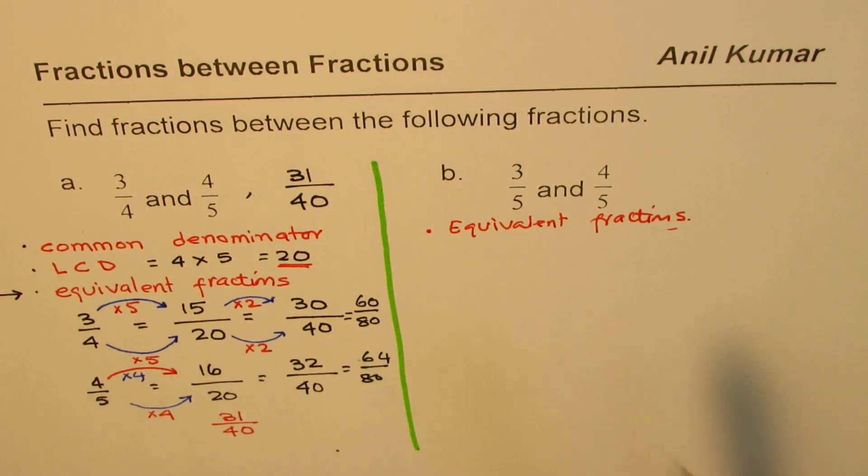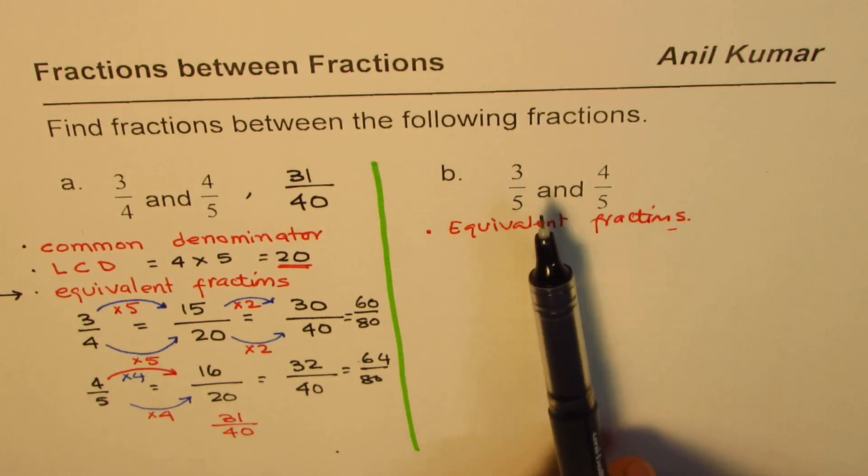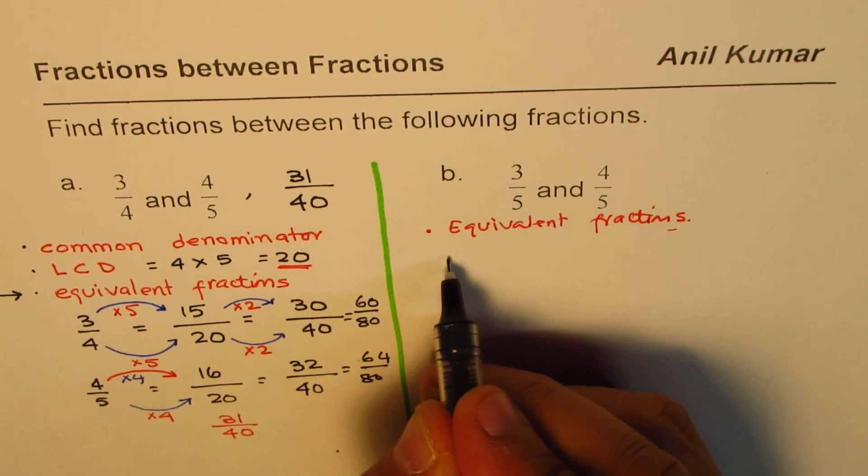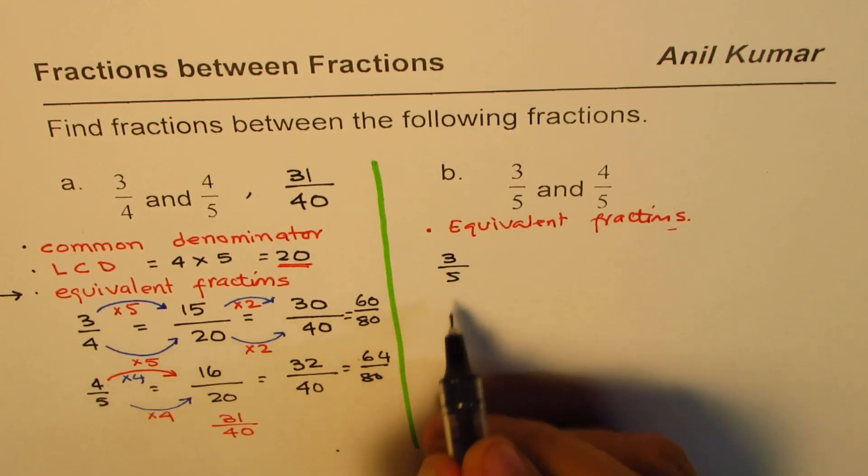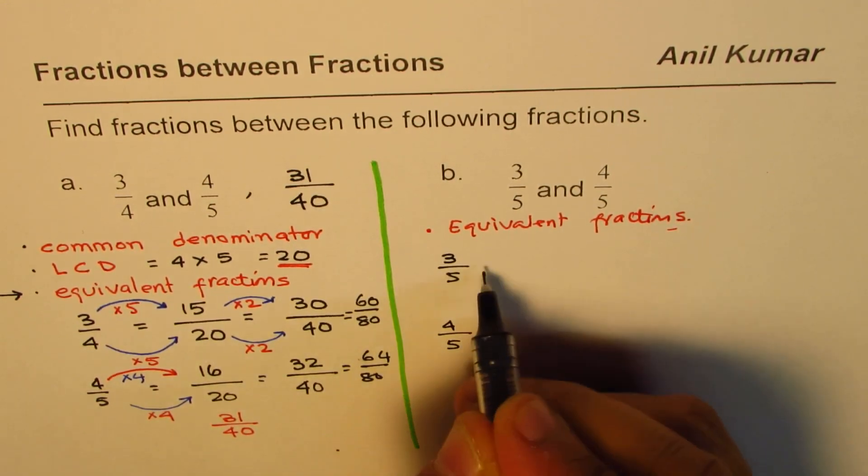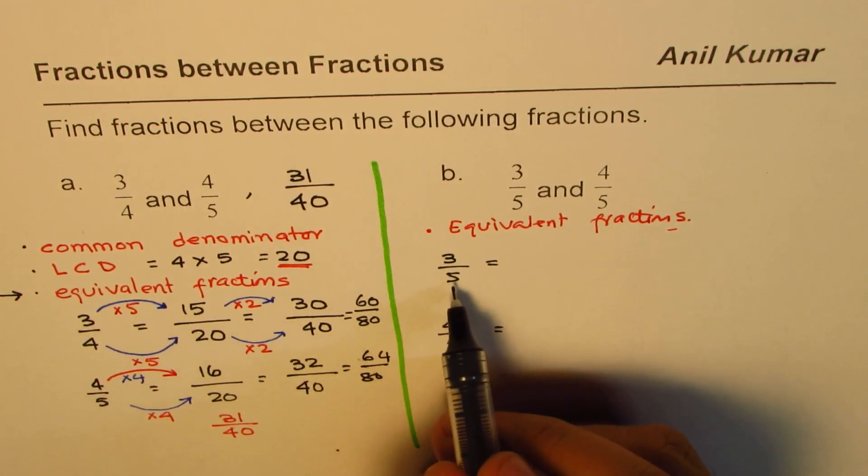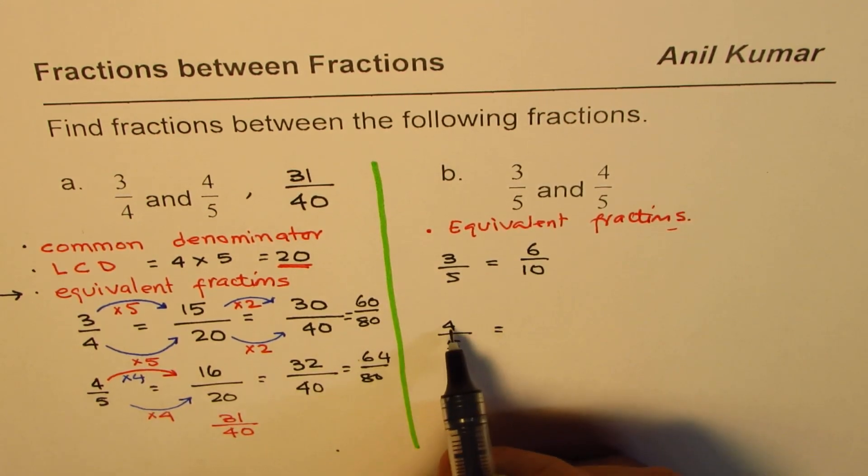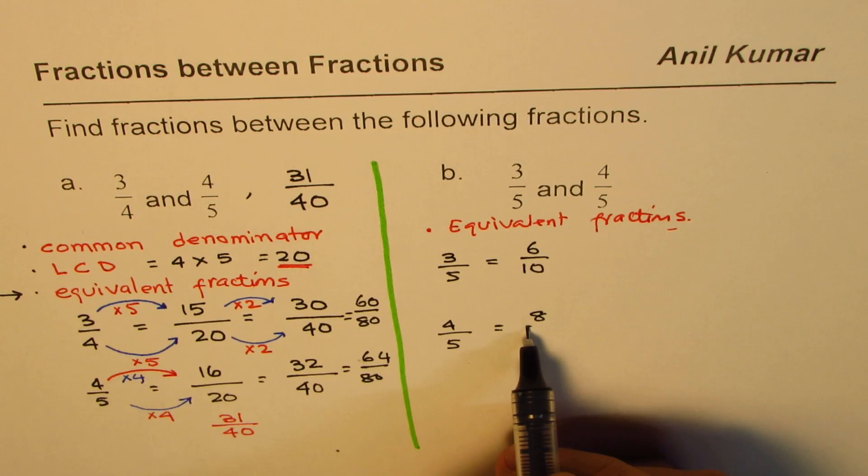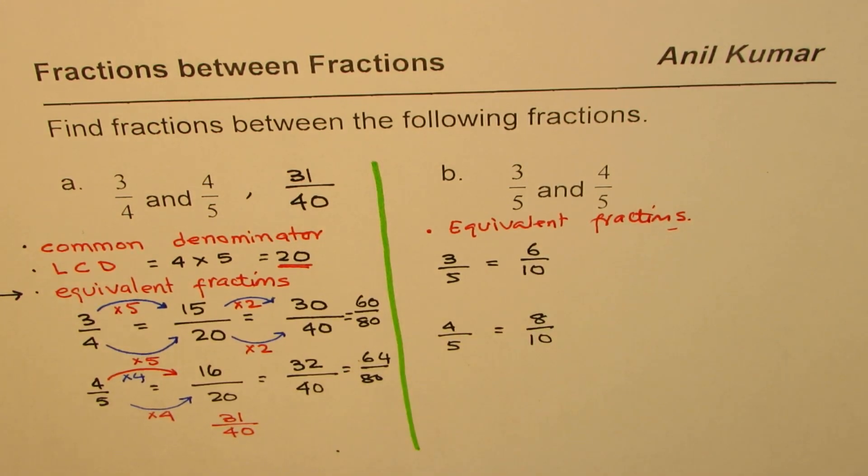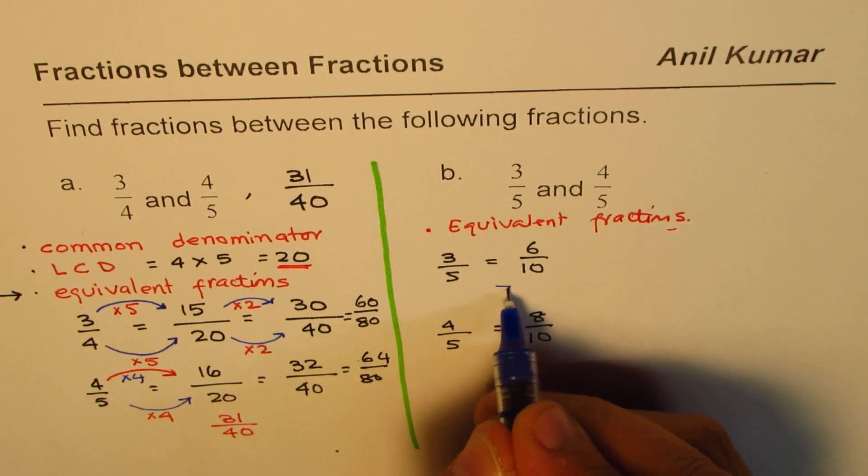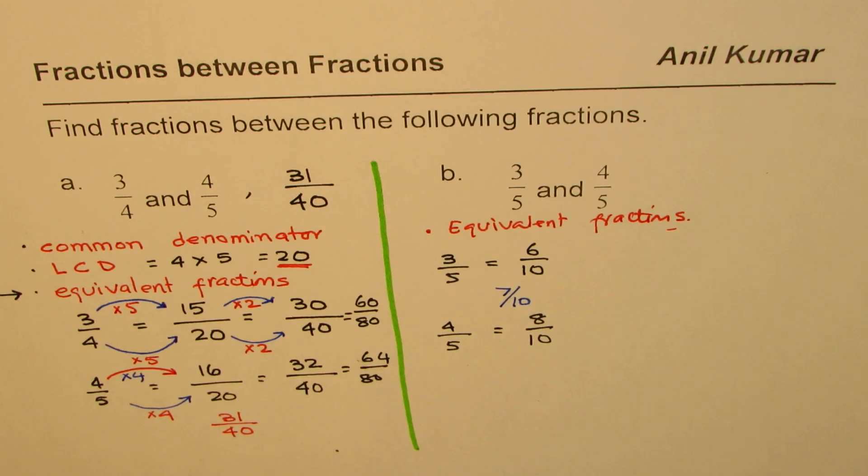Equivalent fractions is the key here. So what you can do is you can multiply both by 2s, you can multiply both by 3s, you can multiply both by 4s, depending on how many numbers do you need in between. So between 3 over 5 and 4 over 5, we are looking for some fractions. If I multiply by 2, I get 6 over 10. And here, if I multiply by 2, I get 8 over 10. And between 6 over 10 and 8 over 10, I can write down a few fractions, which is 7 over 10.